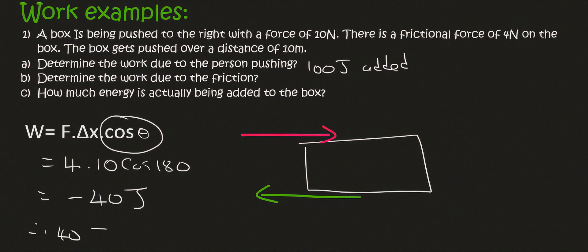Therefore, 40 joules is removed from the box. So please remember that this part over here must always be positive. Question C, how much energy is actually being added to the box?